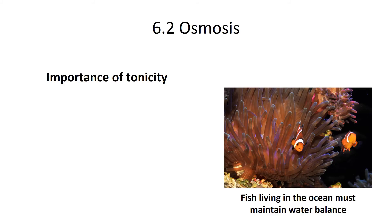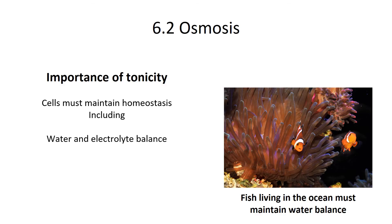Osmosis and tonicity are very important for all living things. Every single cell has to maintain homeostasis, which includes water and electrolyte balance. Even fish living in the ocean have to maintain proper water balance, as many fish are hypotonic to the marine environment and constantly have to work to maintain water inside their cells. Importantly, cells cannot actually pump water in — the way you maintain water balance is by controlling your tonicity or electrolyte balance.